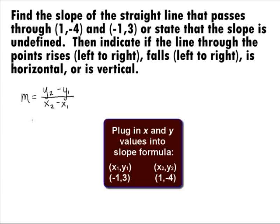Let's go ahead and call (-1, 3) point 1, and (1, -4) point 2. Plugging in our values into this formula, we get -4 minus 3 on top, over 1 minus a negative 1 in the denominator.